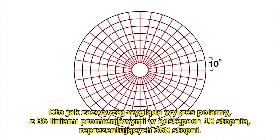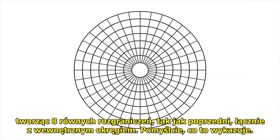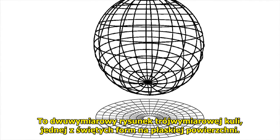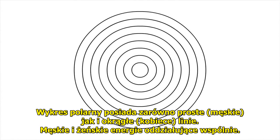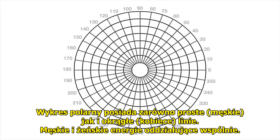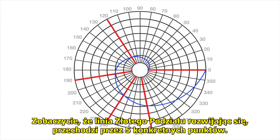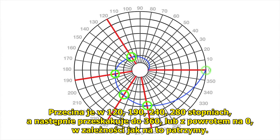This is how a polar graph usually looks, with 36 radial lines in 10-degree increments representing 360 degrees. Concentric circles are drawn, each the same distance from the last, creating 8 equal demarcations counting the inside circle as 1. It's a two-dimensional drawing of a three-dimensional sphere projected onto a flat surface — also called a shadow form. A polar graph has both straight male lines and circular female lines, both male and female energies interacting at once. If you plot a golden mean spiral at 0 degrees on the polar graph, it will loop all the way around before hitting 0 again, exactly at the 8th circle, crossing five specific places at 120, 190, 240, 280, and then 360 degrees.